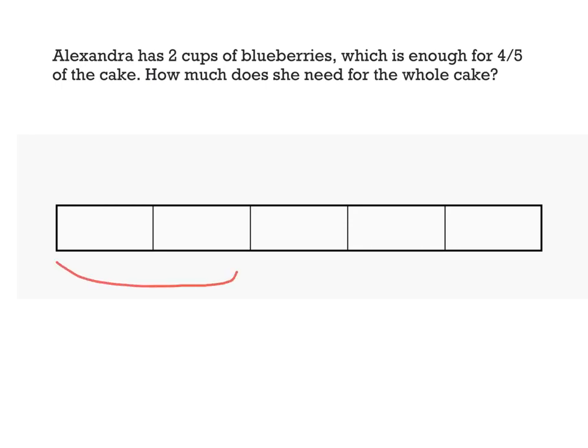So for example, I'm looking for four fifths of the cake. That right there is four fifths of the cake. Four out of the five rectangles. Four fifths of the cake.